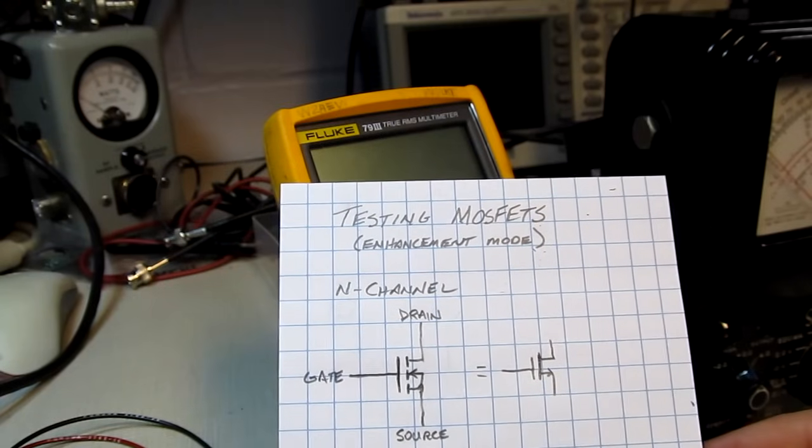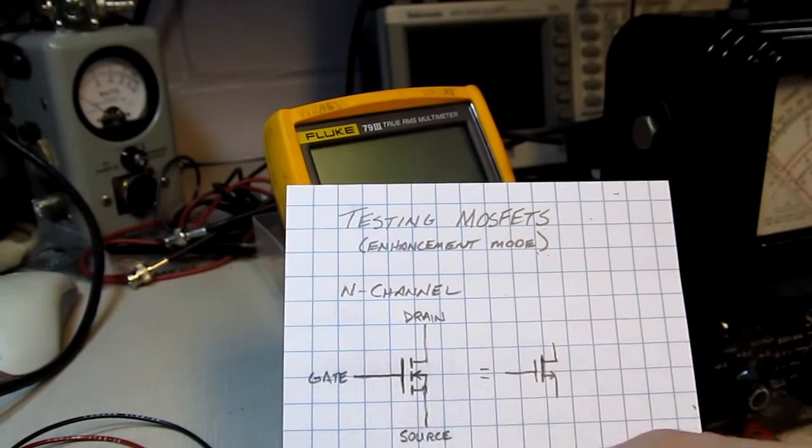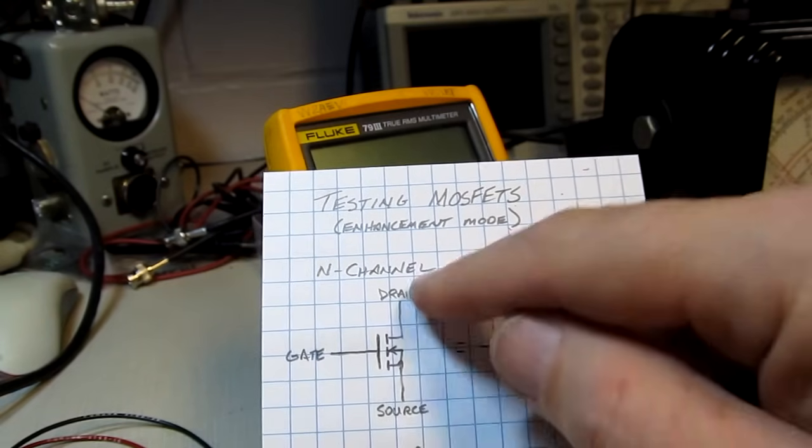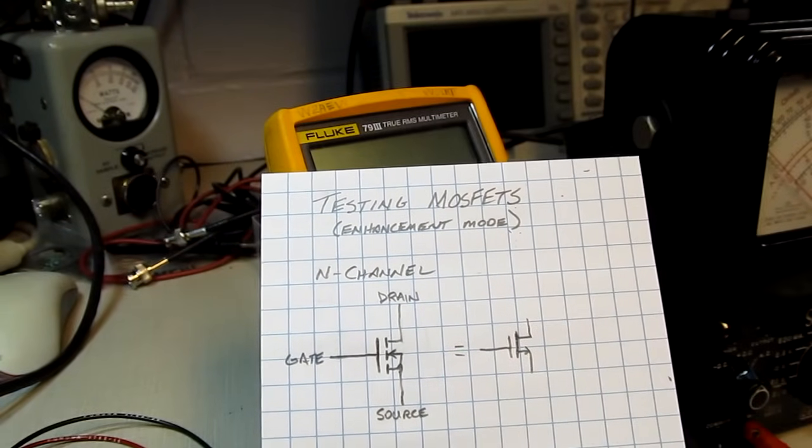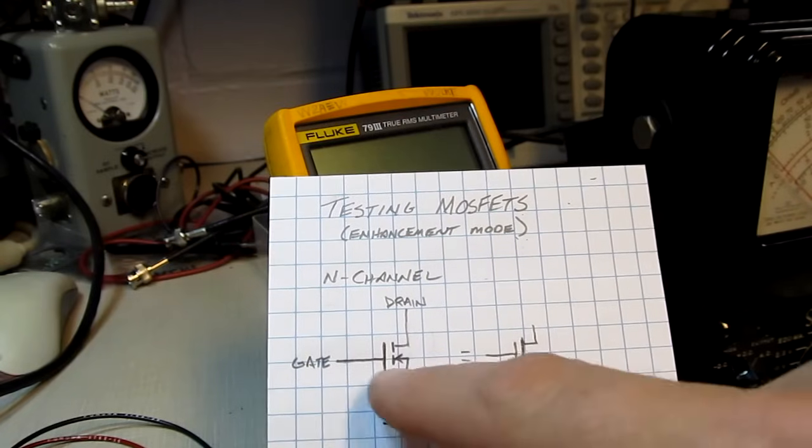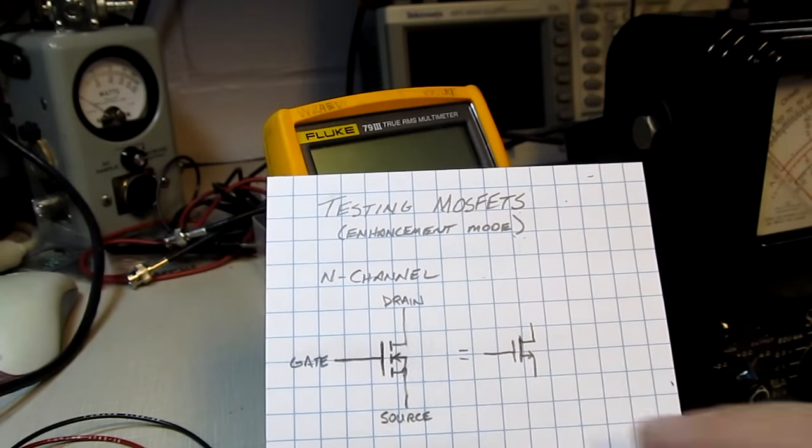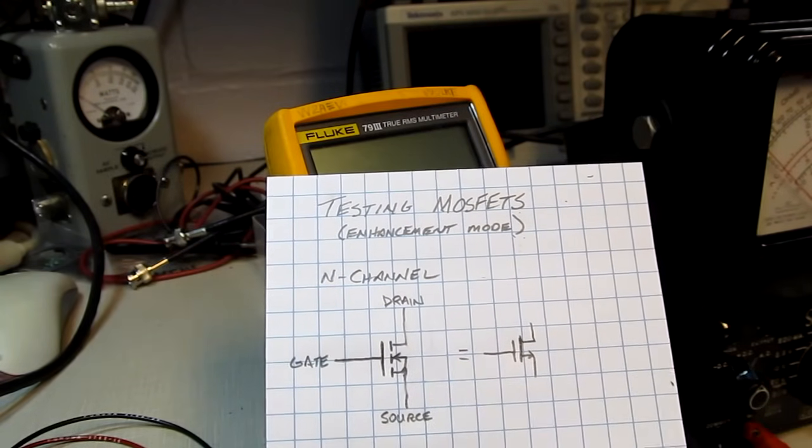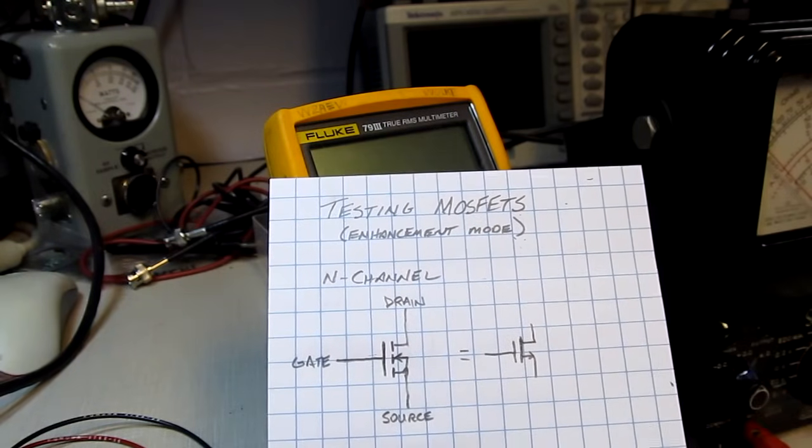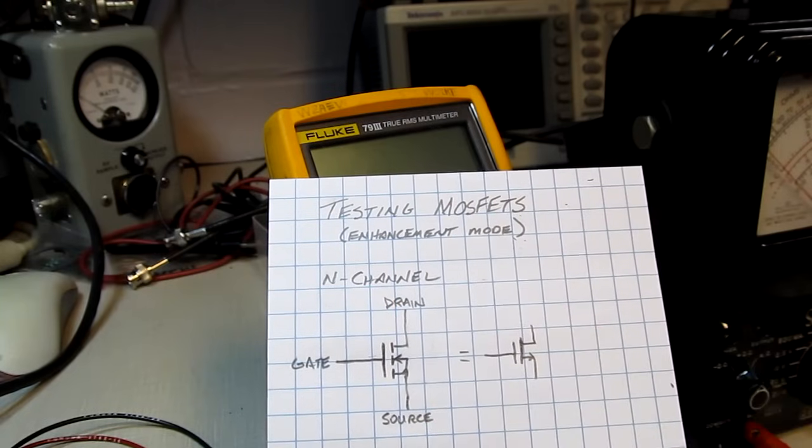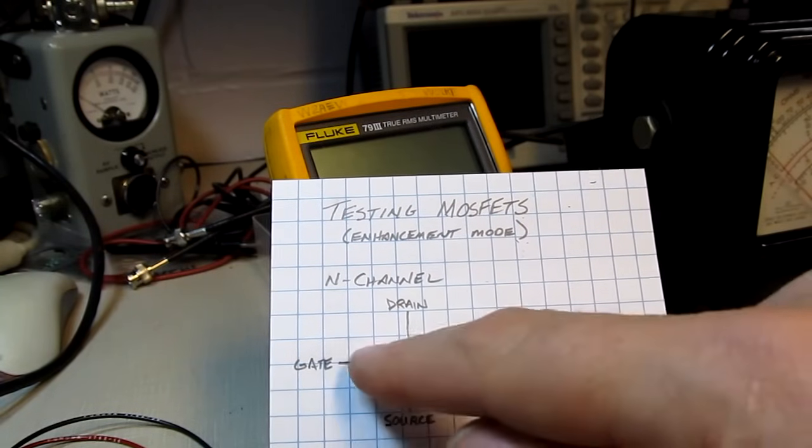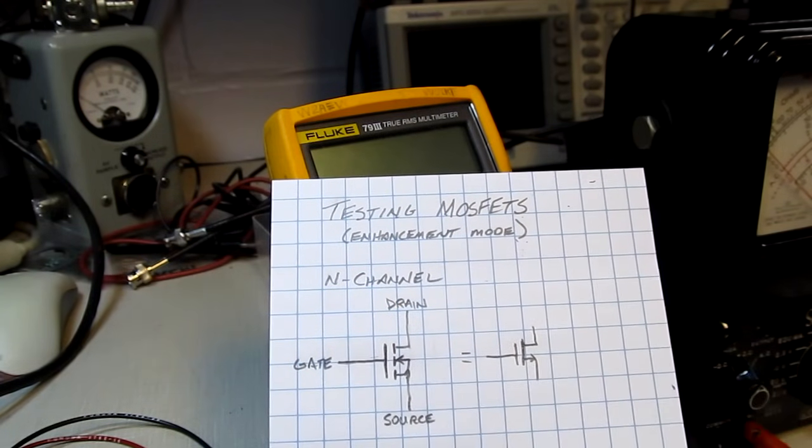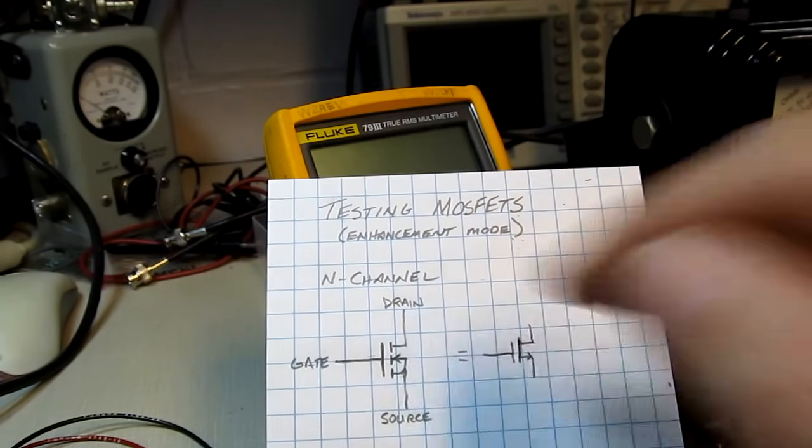Most often, MOSFETs are used as a switch. A voltage is applied to the gate to turn on the drain-to-source path and to act as a switch. The gate is insulated from the drain-to-source and effectively acts like a very small capacitor. A positive voltage on the gate with respect to the source turns on the channel and the device conducts. When the gate-to-source voltage is dropped to zero, then the device shuts off.